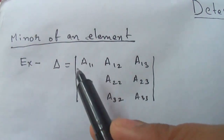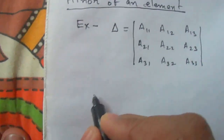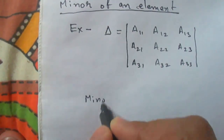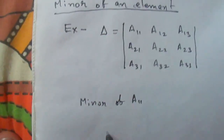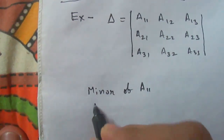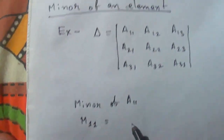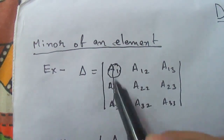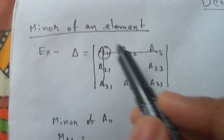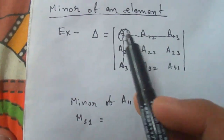Suppose we have to find the minor of a11. The notation to write the minor is m11. To calculate the minor of a11, we circle it and eliminate the corresponding row and column — this you do in your mind.